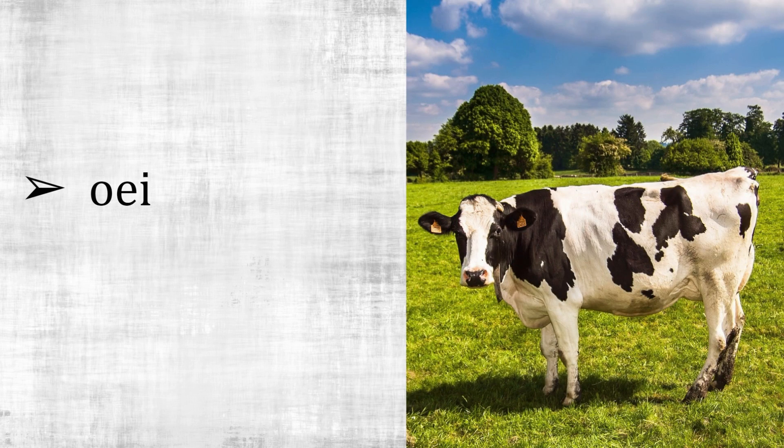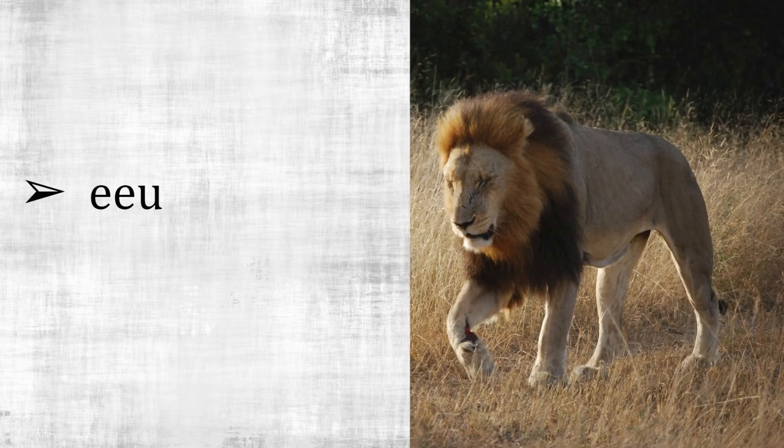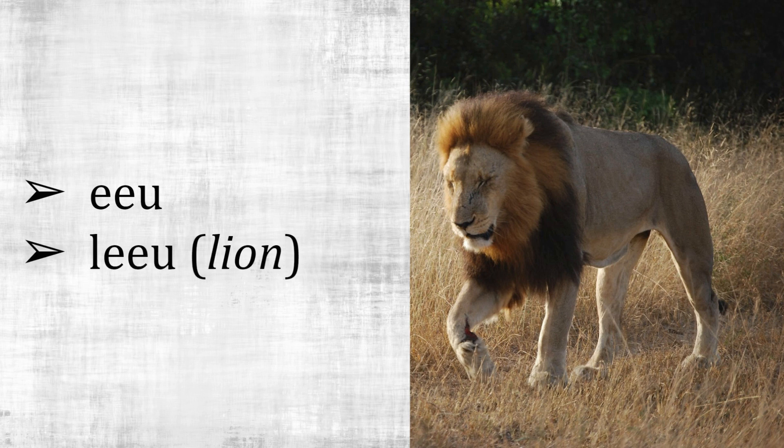Ui, ui, ui — fer — kui. Ui — fer — kui. Eiu, eiu, eiu — fer — liu. Iu — fer — liu. These are the remaining medium-difficulty vowel combination sounds.